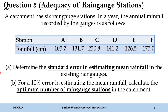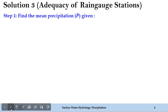The first part of this problem is to determine the standard error in estimating mean rainfall using the existing rain gauges. The second part is: for a 10% error in estimating the mean rainfall, calculate the optimal number of rain gauge stations in the catchment. So in the second part, we are required to find out how many rain gauge stations are actually required for the given conditions. Let's see how to solve such problems.